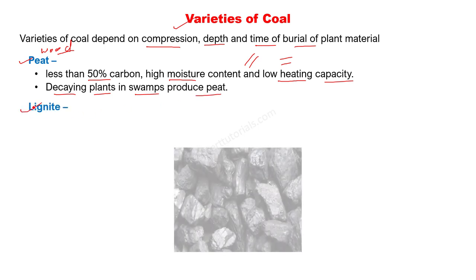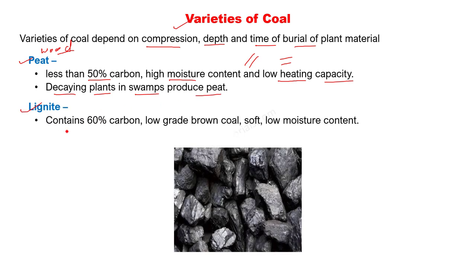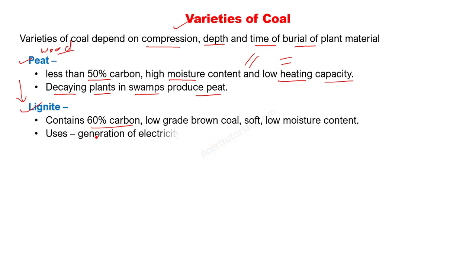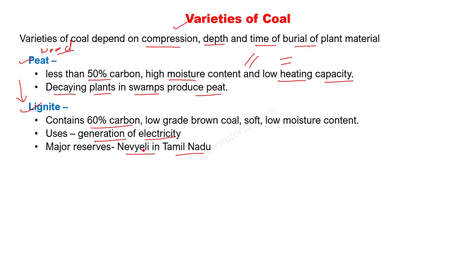After peat comes lignite. It contains about 60% carbon — more than peat. It forms at greater depths than peat, and is mostly used in electricity generation. Since most of our power plants are thermal, lignite is commonly used. Major reserves of lignite are found at Neyveli in Tamil Nadu. We will study the map in the last video to locate these places.